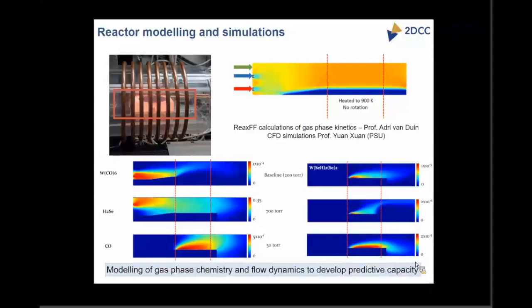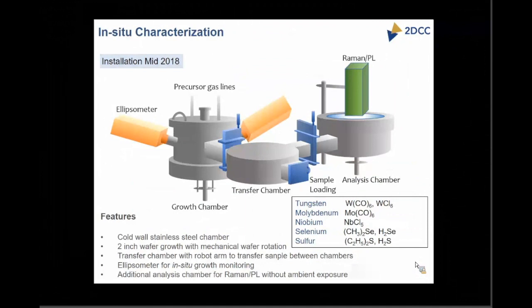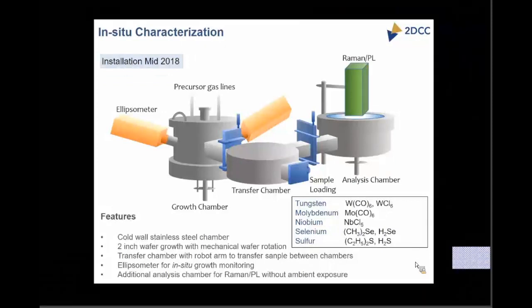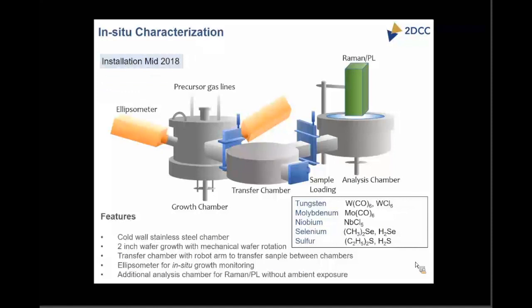We are also extending capabilities into in-situ characterization. A new system to be installed in mid-2018 has multiple modules: a transfer chamber for loading and unloading samples without exposing the growth chamber to atmosphere, a stainless steel vertical chamber with optical ports for spectroscopic ellipsometry to monitor growth in real time, and a Raman and PL chamber. Samples can be transferred between chambers without ambient exposure. This system focuses on transition metal dichalcogenides, working with tungsten hexacarbonyl, molyhexacarbonyl, H2Se, and hydrogen sulfide.